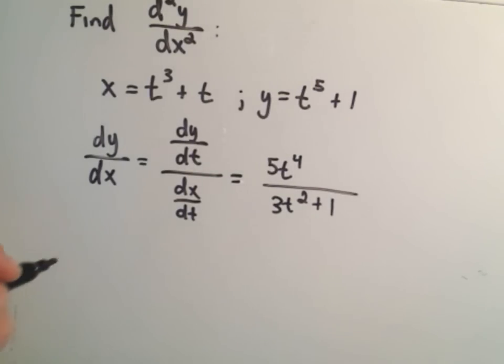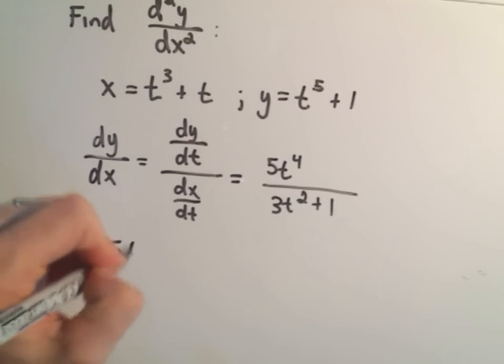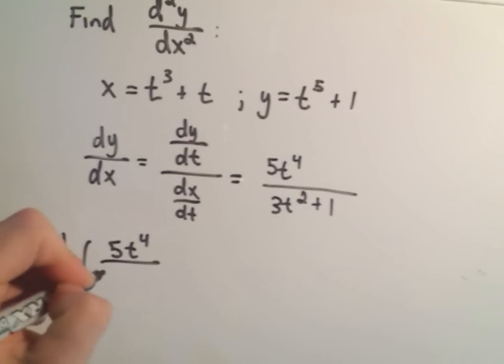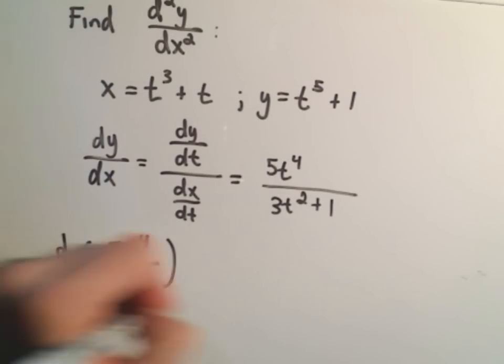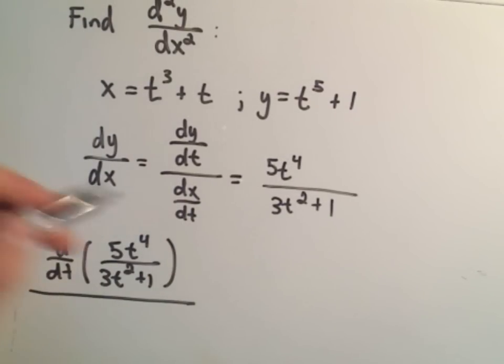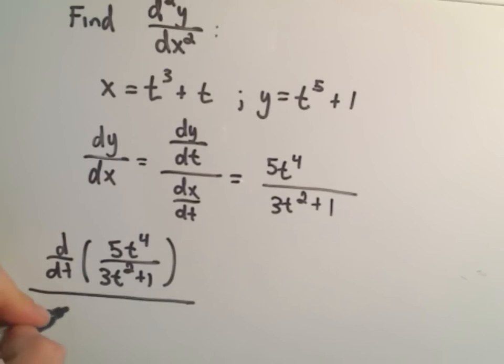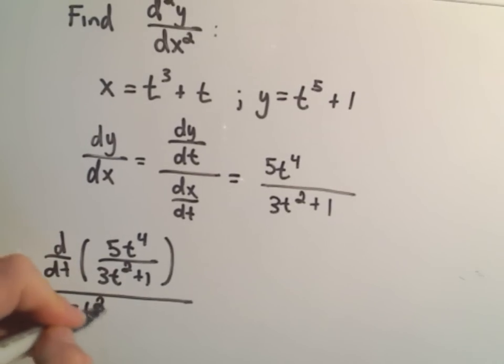And it says to calculate the second derivative, it says I have to take the derivative with respect to t of dy dx, which is 5t to the fourth over 3t squared plus 1. And it says I divide all of that by the original dx dt. And dx dt we just calculated was 3t squared plus 1.